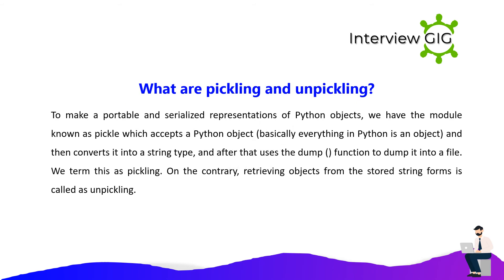What are pickling and unpickling? To make portable and serialized representations of Python objects, we use the pickle module, which accepts a Python object (basically everything in Python is an object), converts it into a string type, and then uses the dump function to dump it into a file. We term this pickling. On the contrary, retrieving objects from stored string form is called unpickling.